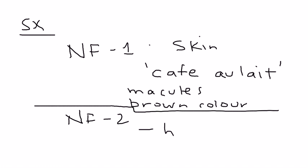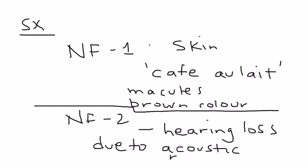Neurofibromatosis type 2's most common symptom on licensing exams is hearing loss due to acoustic neuromas. These acoustic neuromas compress cranial nerve 8, which leads to deafness.